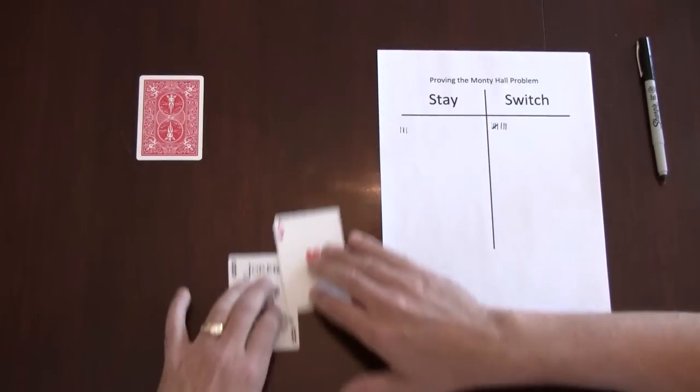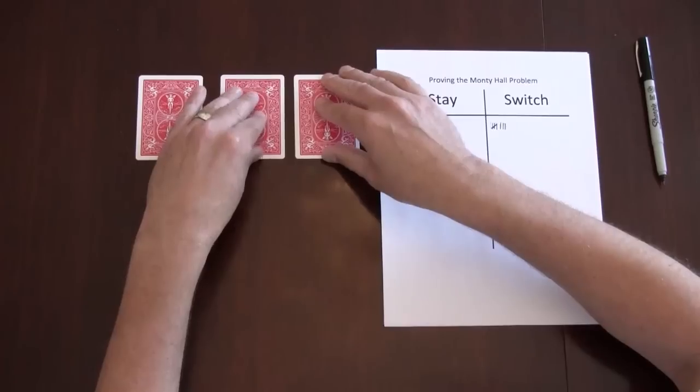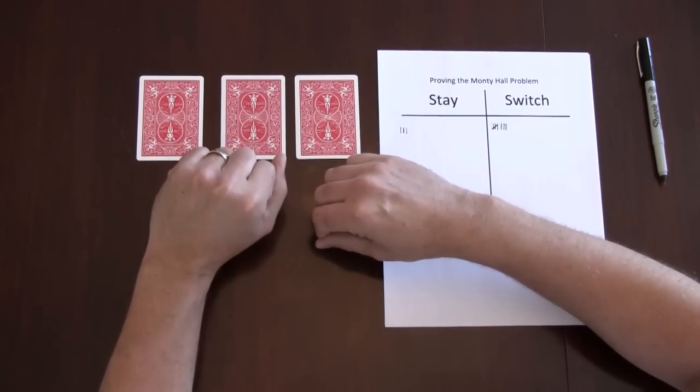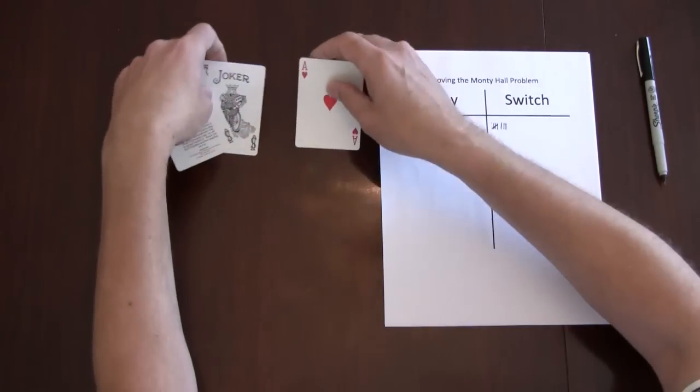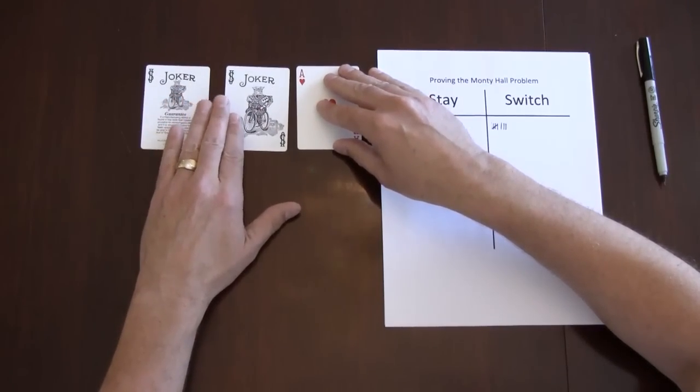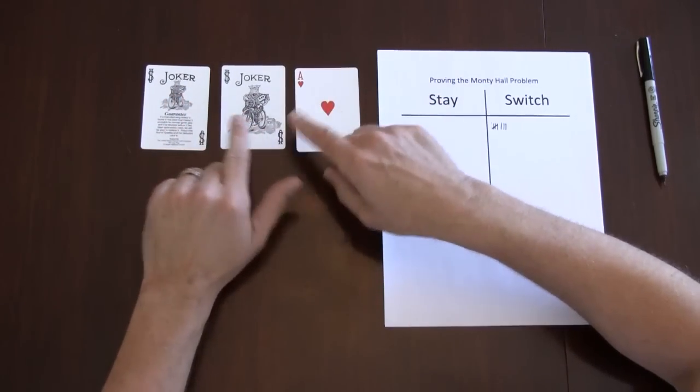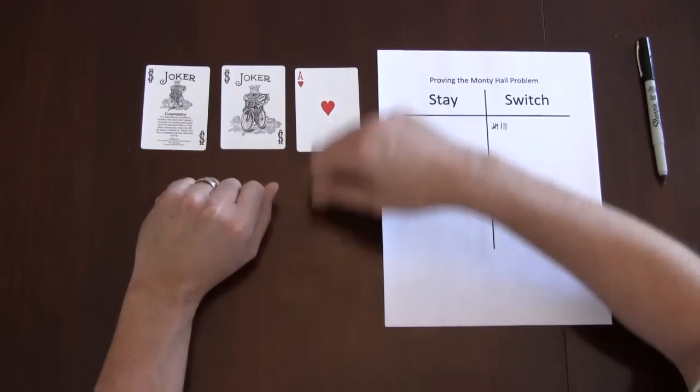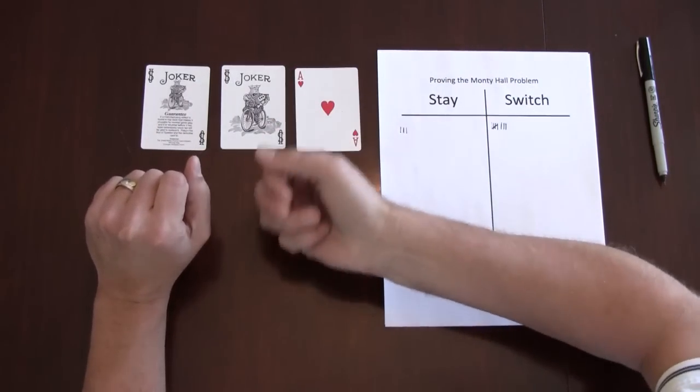As I said, there's actually two random events. First one is the producers placing the car behind the door. The second one is which door you choose. You only need one of those two random systems for this to work. So the other way you can do this is to leave the car in the same place and use a die to randomize your choice.